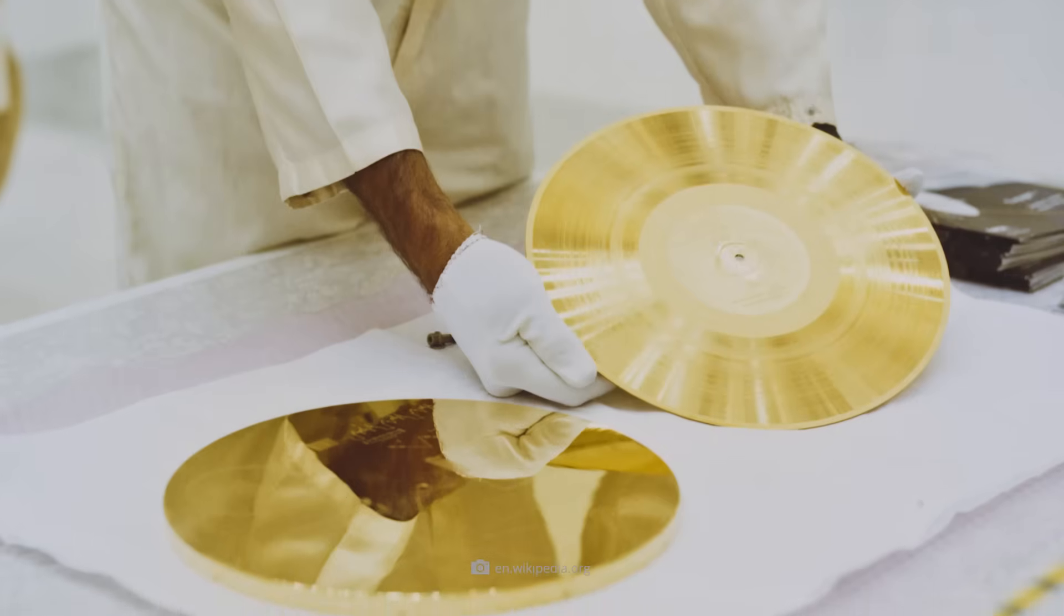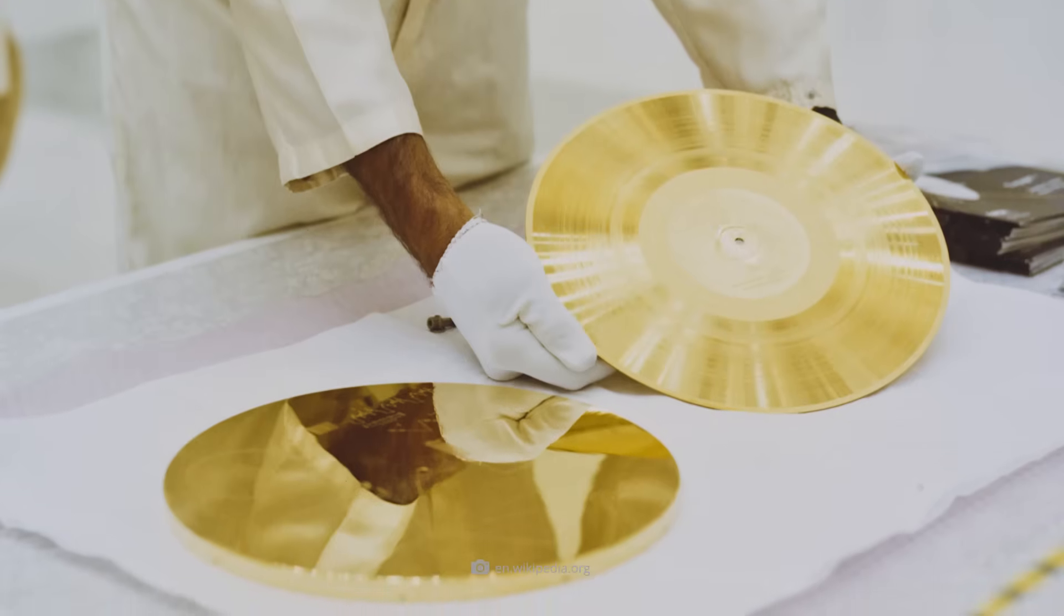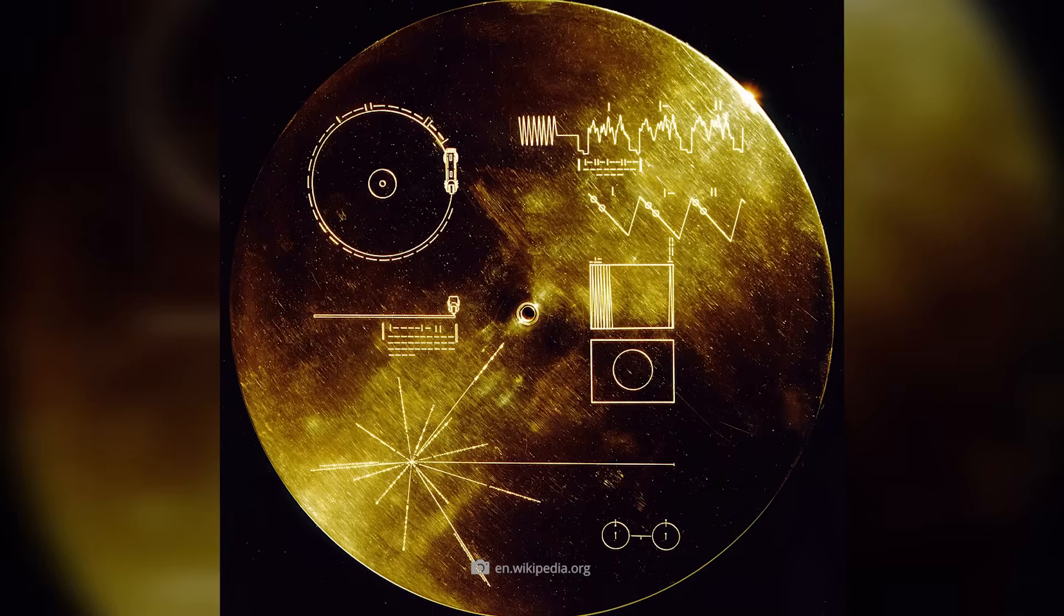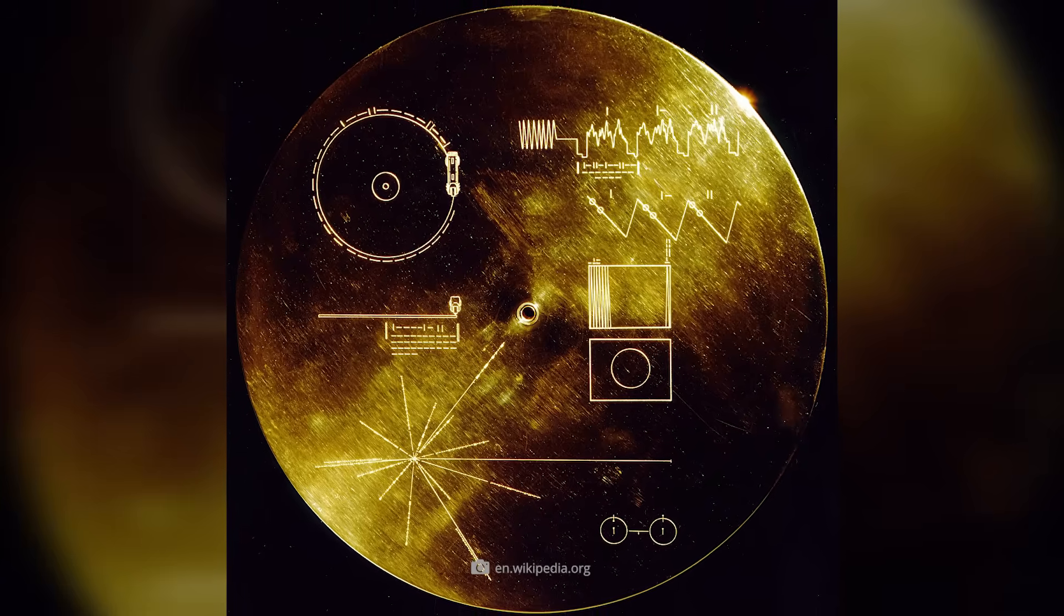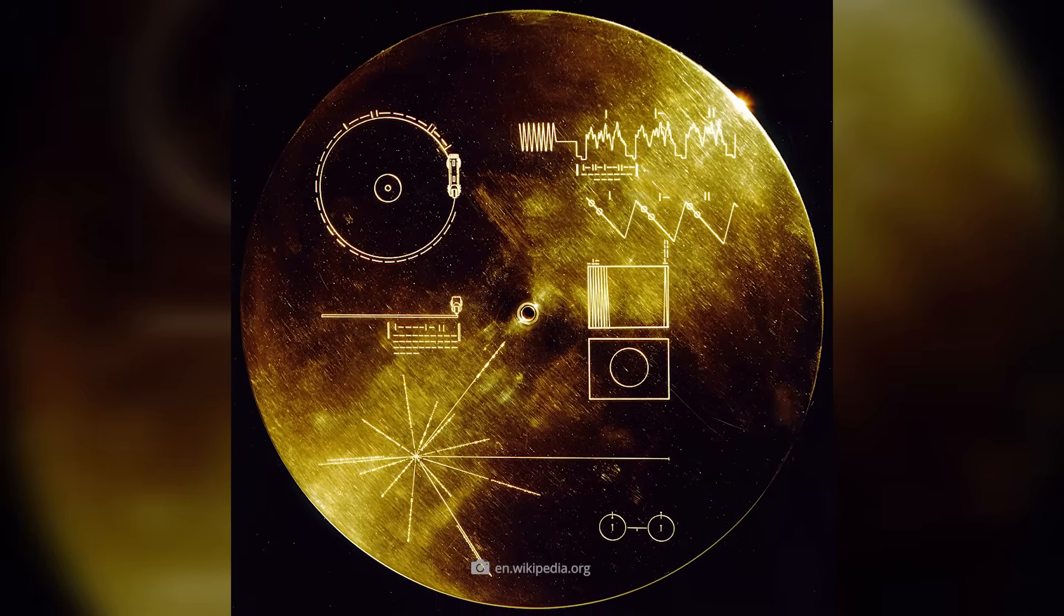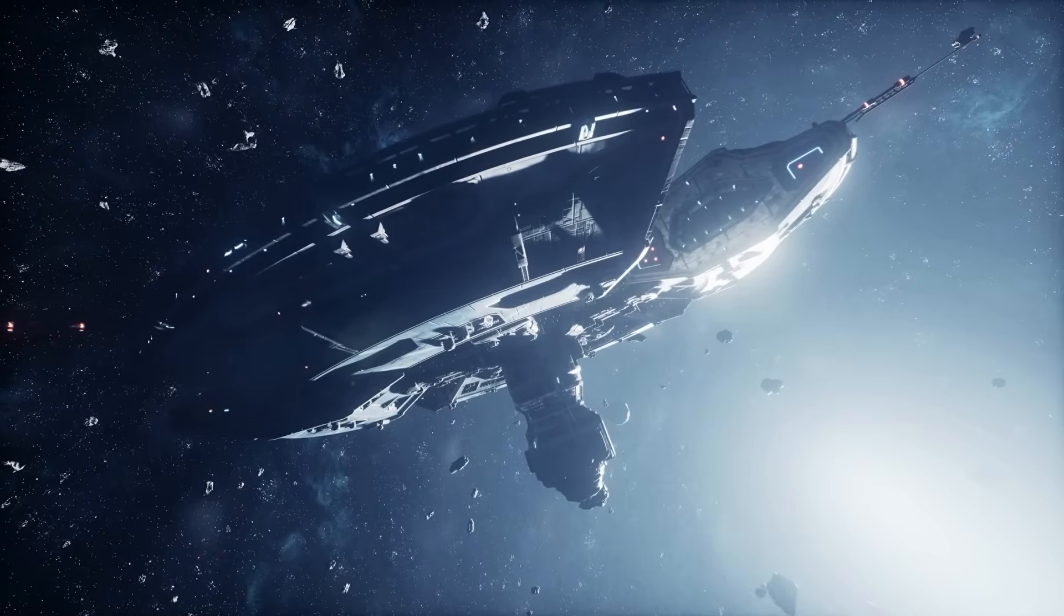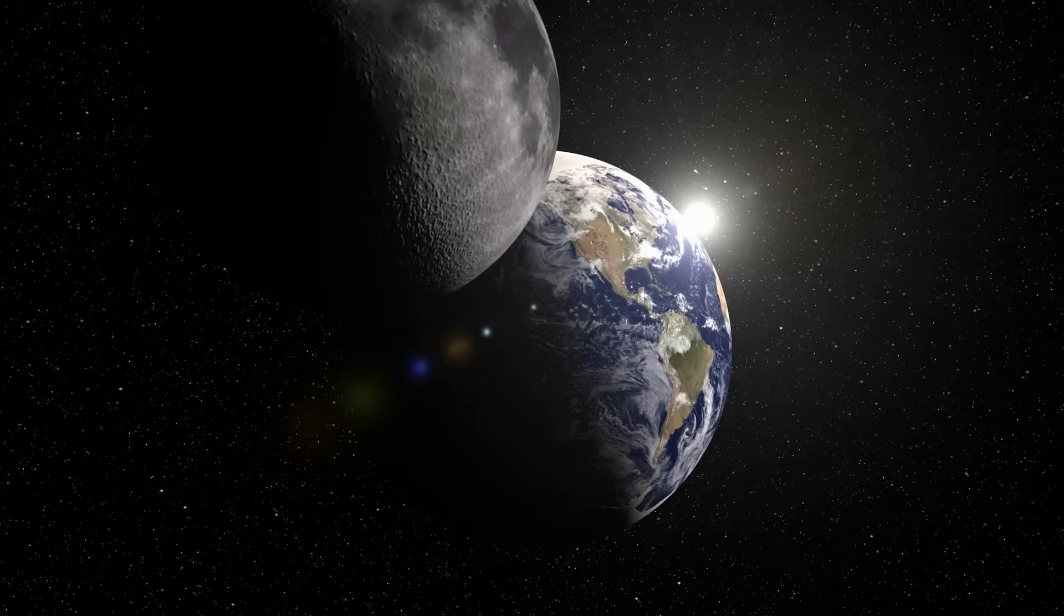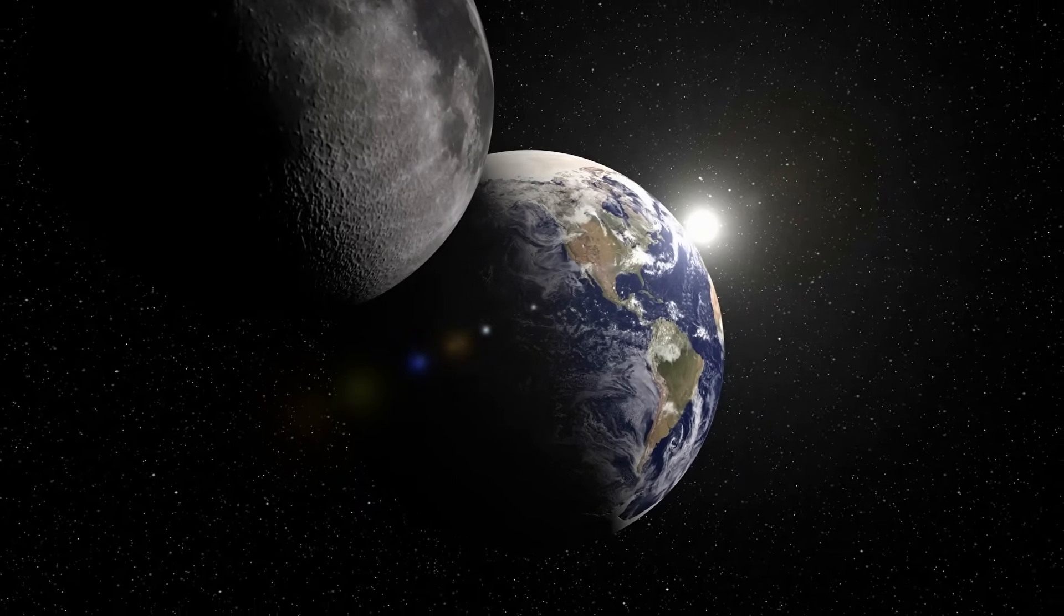This refers, of course, to the Voyager Golden Records, two 30-centimeter-long gold-plated copper records containing information about Earth, as well as images, sounds, music, and messages of greeting. If an extraterrestrial intelligence manages to decode the records, it would know who we are, where we come from, and what makes us special.